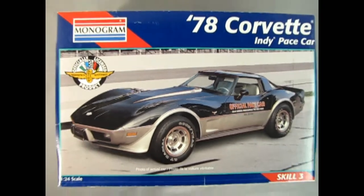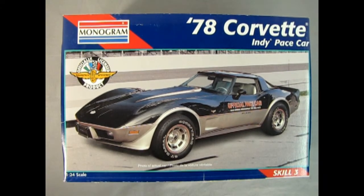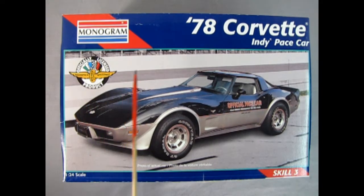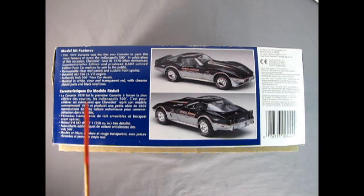The 1978 Corvette was the first ever Corvette to pace the Indianapolis 500. In celebration of this occasion, Chevrolet took its 1978 Silver Anniversary Commemorative Edition Corvette and produced 6,502 limited edition pace car replicas for the general public. Monogram's 1978 Corvette Indy Pace Car is a 1:24 scale model kit with a skill level 3 rating. On this side of the box we see our model kit features which include removable clear roof panels, detailed 350 cubic inch engine, and authentic Indy 500 pace car decals.